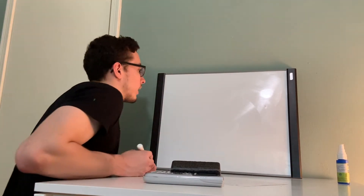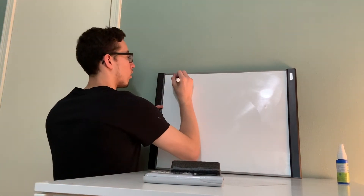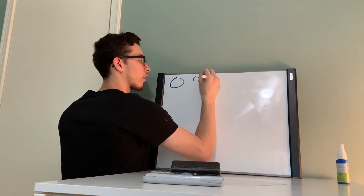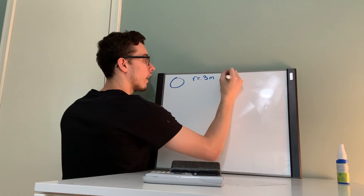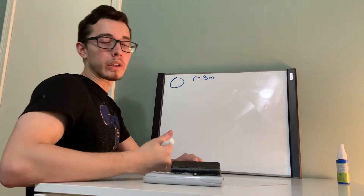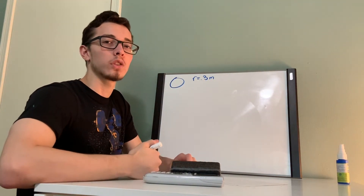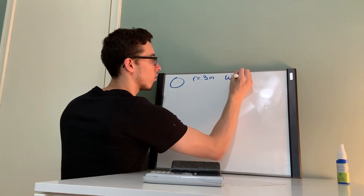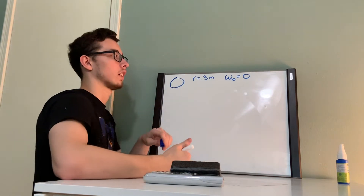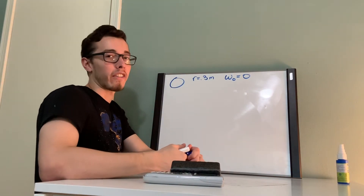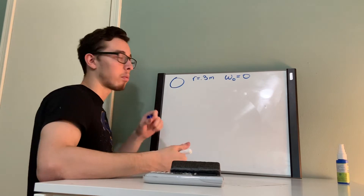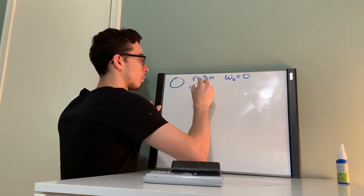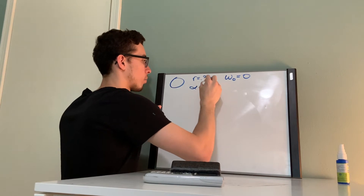In this problem, they tell us that we have a flywheel with a radius of 0.3 meters. They also tell us that we start at rest, so our initial angular velocity is going to be zero because we are not moving. Next, they tell us that we have a constant angular acceleration of 0.6 radians per second squared.